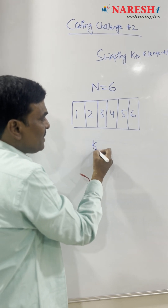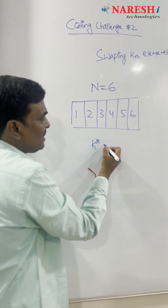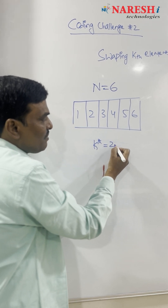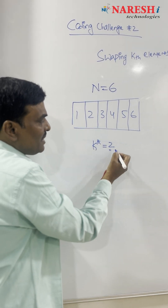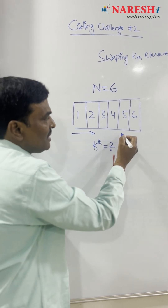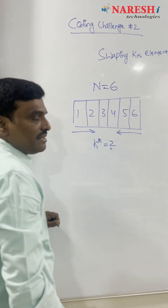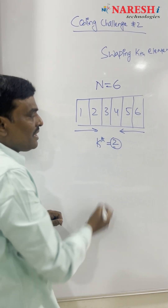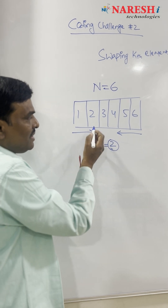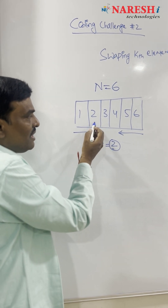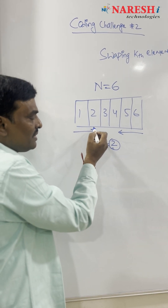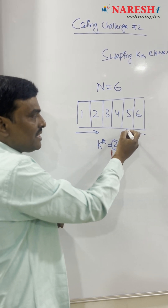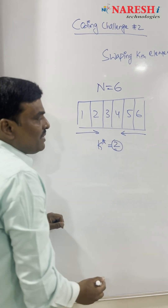Now we need to swap the kth element. Suppose the kth element is two. You have to swap the kth element from the beginning with the kth element from the end. So what is the value of k here? It is two. It means you have to swap the element at the second position from the beginning with the element at the second position from the end.